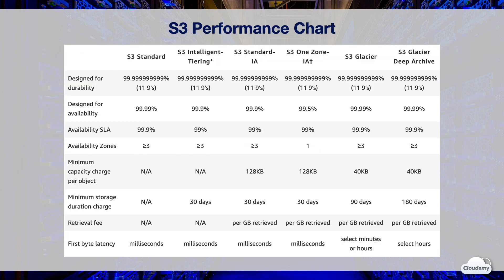Here's the performance chart of S3 classes. All S3 classes can provide 11 nines of durability, however One Zone IA only provides 11 nines durability within one AZ. S3 Standard, Glacier, and Glacier Deep Archive are designed for 99.99% availability. AWS provides an SLA guaranteeing 99.9% availability. S3 Intelligent Tiering and Standard IA are designed for 99.9% availability with an SLA of 99%. All S3 storage classes except One Zone IA store data across at least three availability zones.